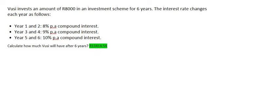In this question, we have a guy called Vusi who invests an amount of 8,000 Rand for six years. However, in this question, the interest rate changes. So let me show you how to approach this one. There's a slow way and there's a fast way. I'm going to do both so that you can see what's happening.